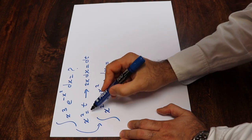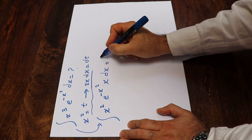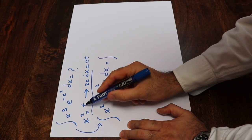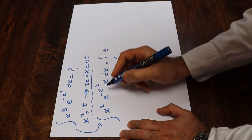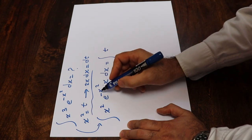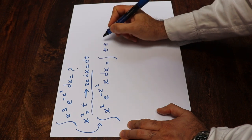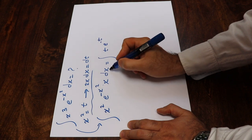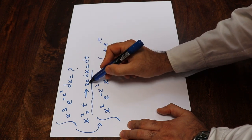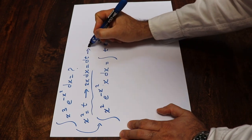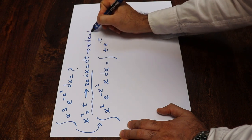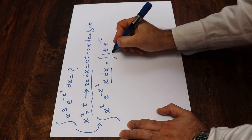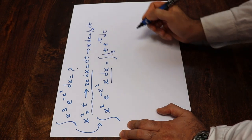Now if you substitute this expression into the integral, you can rewrite it as: instead of x², I write t; instead of e to the power of minus x², I write e^(−t). And instead of x dx — since 2x dx = dt, therefore x dx = (1/2) dt — I write (1/2) dt.